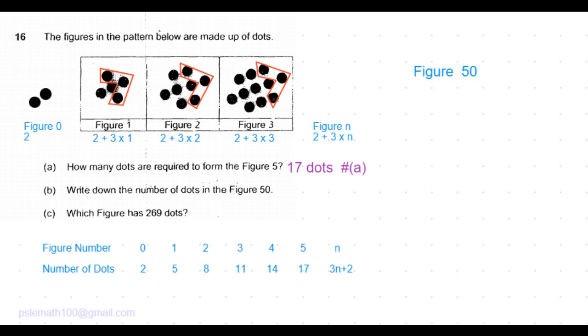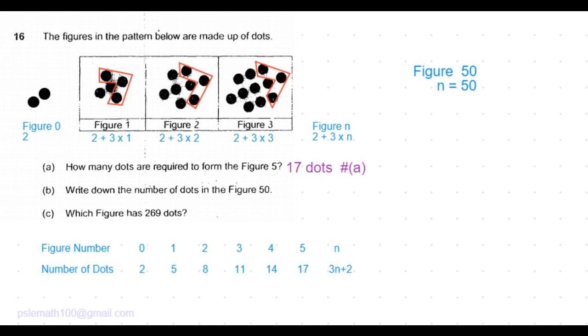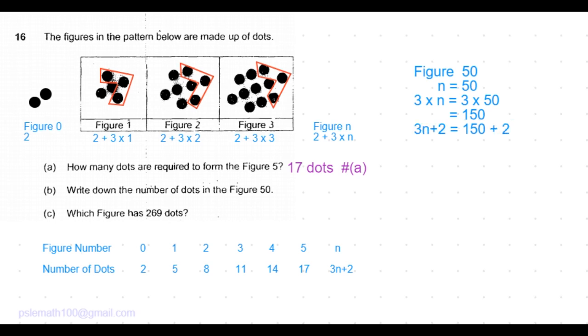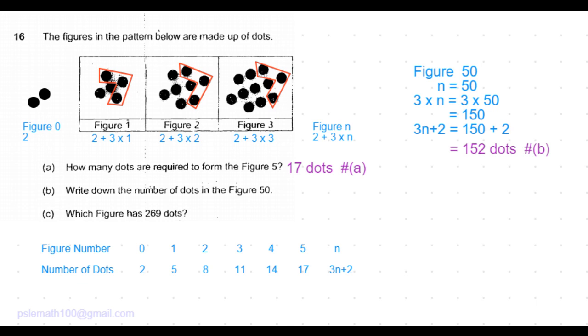So part B of the question is: write down the number of dots for figure 50, which means n is equal to 50. So 3 times n is 150, and 3n plus 2 is 150 plus 2, which is 152 dots. So that's the answer to part B of the question.